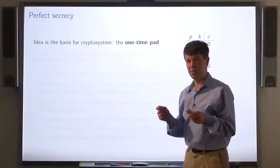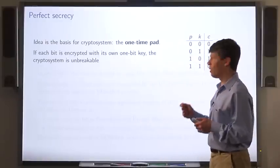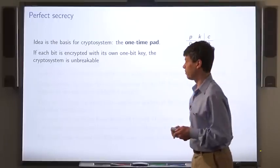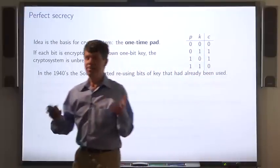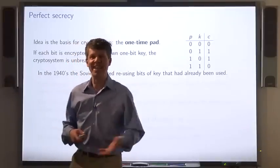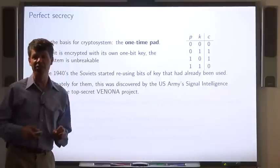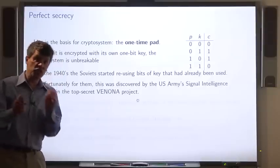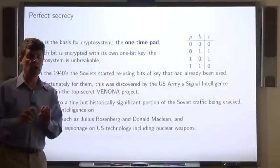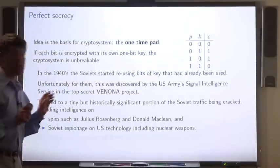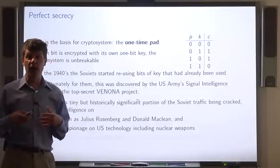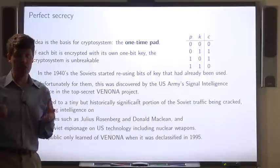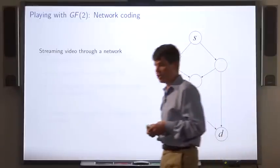This is the idea for the cryptosystem called the one-time pad. If each bit is encrypted according to this table with its own one-bit key, this cryptosystem is unbreakable. No eavesdropper can learn anything. Now, in the 1940s, the Soviets seemed to have run out of key and they started reusing bits that they had used from previous messages. And this was discovered by the U.S. Army's Signal Intelligence Service. They started slowly finding places where they could decrypt little bits of the message. This led to some very important intelligence, including information about Soviet espionage on nuclear weapons. And we only learned about this in 1995 when information on this project, the Venona project, was declassified.